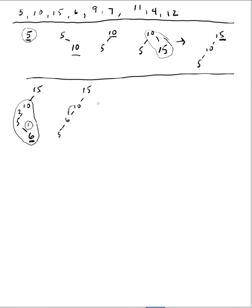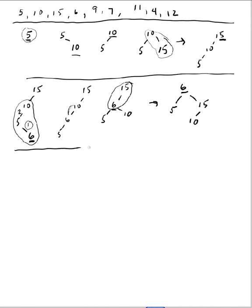Then I rotate right around this link, so I have 15, 6, 10, and 5. Here is the new node I inserted. I'm not done yet — I have to rotate around the next level up, which is the root, so it's a single rotation. My new node X is rotated up to the root level. That takes care of the 6 insertion.